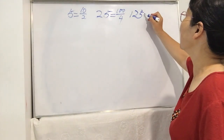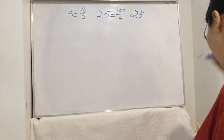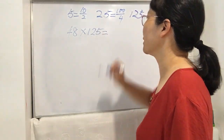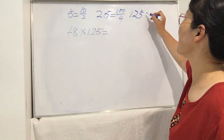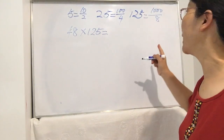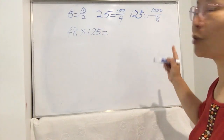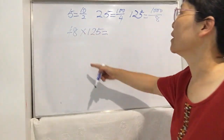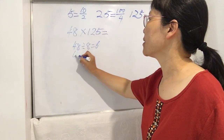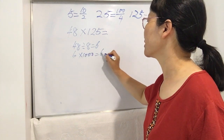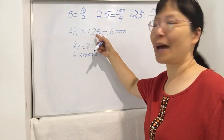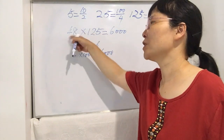Now let's see the last one: times 125. Suppose 48 times 125. First, you need to know that 125 is 1000 divided by 8. So use the same trick: 48 divided by 8 is 6, and then 6 times 1000 is 6000. The answer is 6000. So in the future, if you see any number times 125, first divide that number by 8, then times 1000.